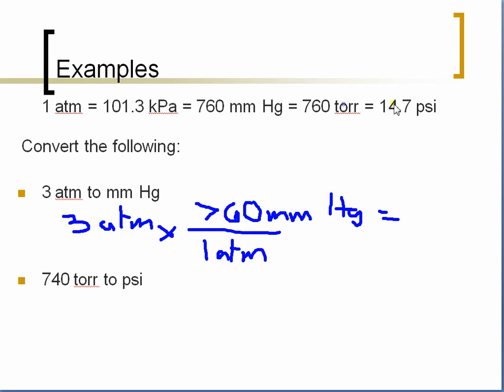And you plug this in the calculator. And you get 2280 millimeters of mercury. There we go.